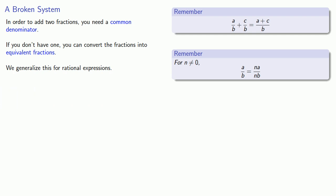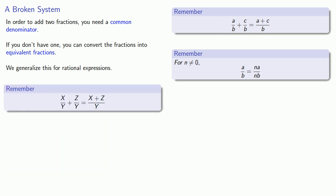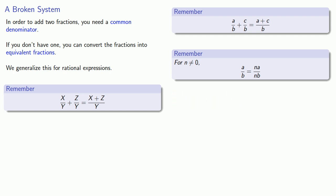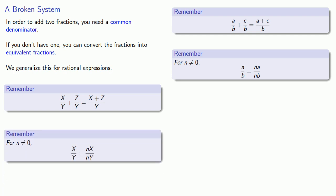If we have two rational expressions with the same denominator, we can add the numerators and keep the common denominator. And given any rational expression, we can multiply numerator and denominator by the same thing without changing what the expression actually is.